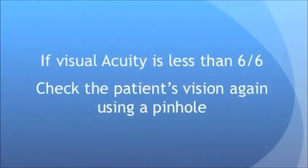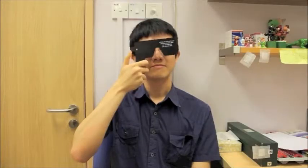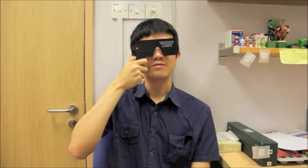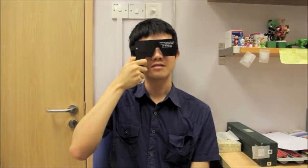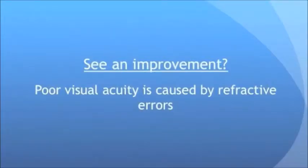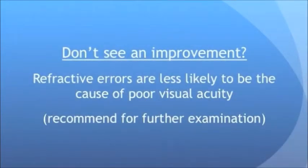If visual acuity is less than 6 over 6, perform the pinhole test. This is done by having the patient look through a pinhole while you check for visual acuity. If there is underlying refractive error, visual acuity should improve with the pinhole test by at least 1 or 2 lines. If there is no improvement, refractive error is less likely to be the cause of poor visual acuity, and further examination must be done to look for intrinsic eye disease.